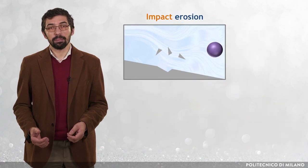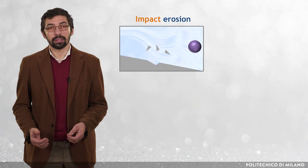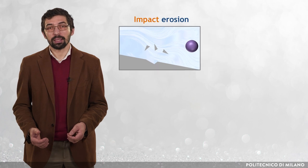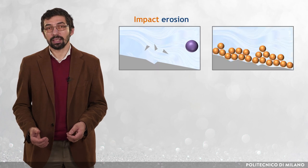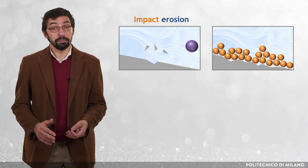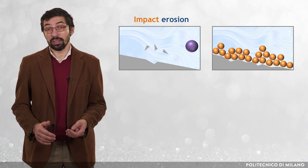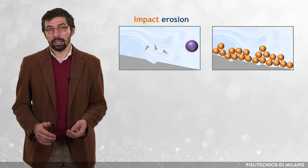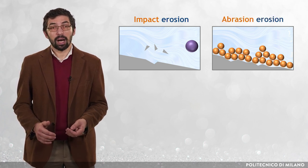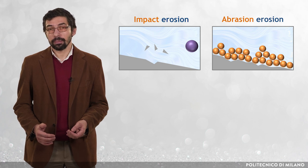A different type of wear occurs in the lower part of a straight slurry pipeline due to the shear action of a moving bed of solid particles. In this case, the term abrasion erosion is often used.